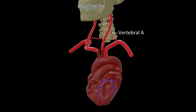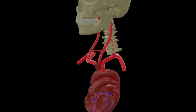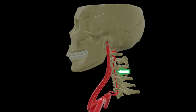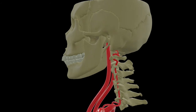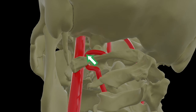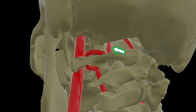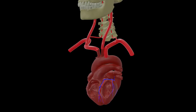This subclavian artery gives out the vertebral artery. This vertebral artery soon enters the foramen transversarium of the sixth cervical vertebra, then moves up through the foramen transversarium of all the vertebrae above, and then after exiting from the foramen transversarium of the first cervical vertebra it grooves the upper surface of the posterior arch of the atlas, and then through the foramen magnum it enters the skull. We will follow the course of this vertebral artery inside the skull later. The subclavian artery also gives out the thyrocervical trunk and then goes on to supply the upper limb.